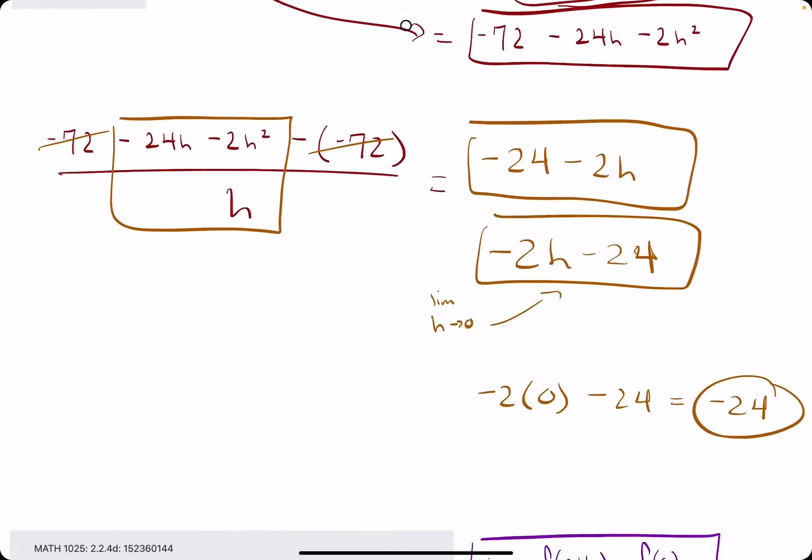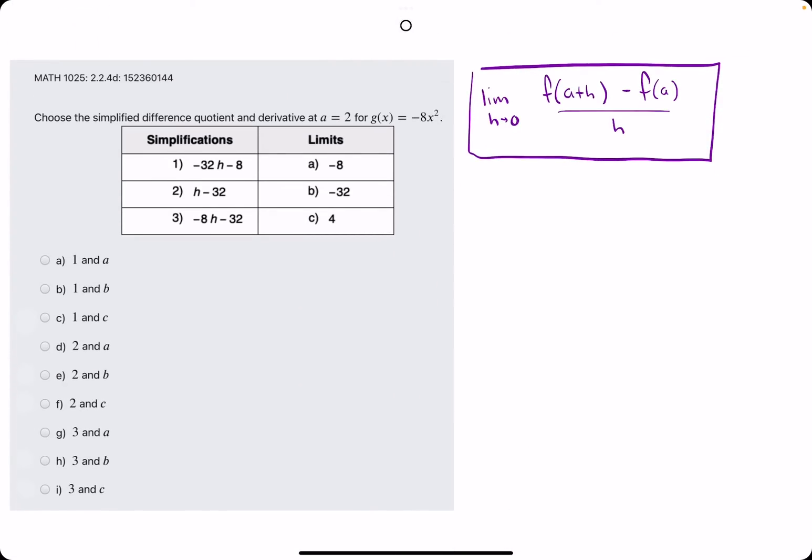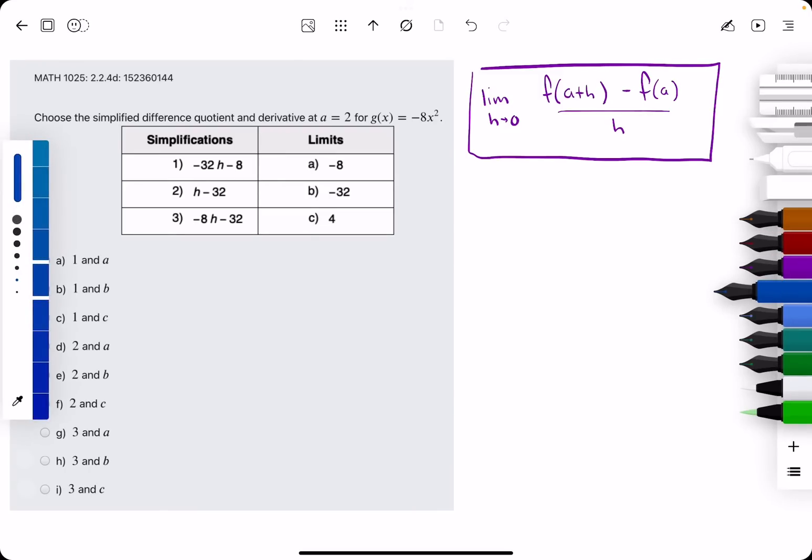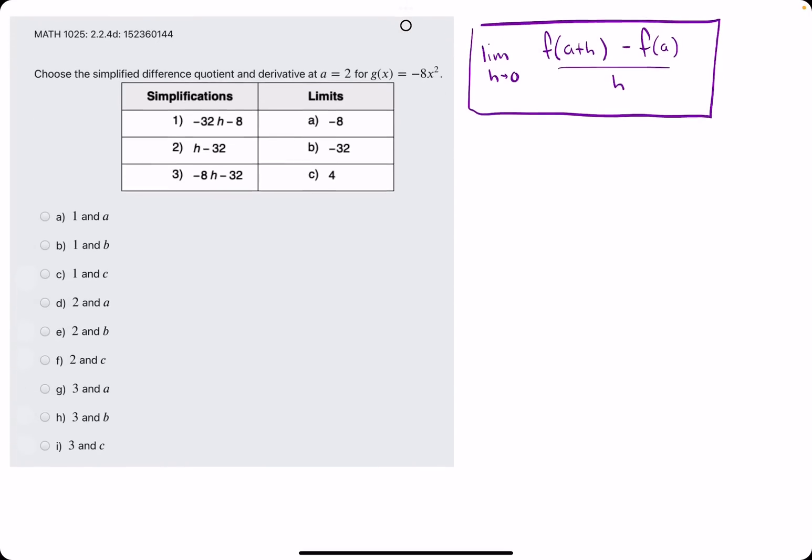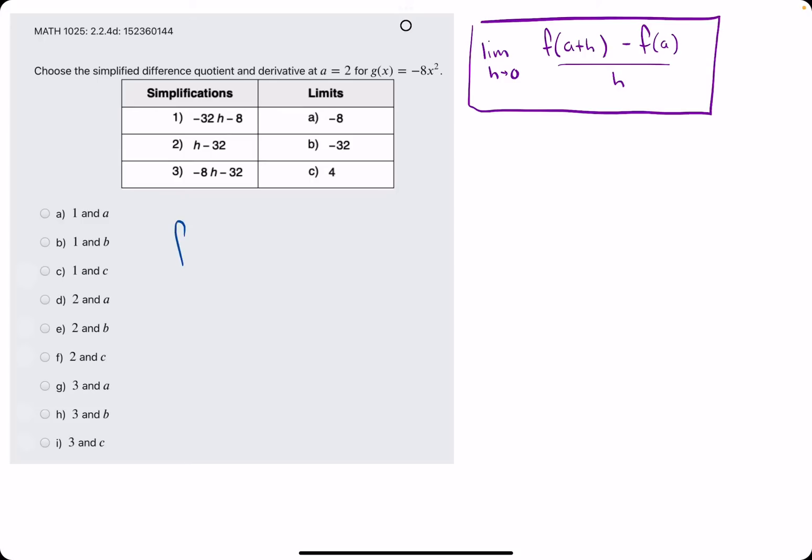I'll go ahead and work out one more example of this. So feel free to stick around if you'd just like to see one more worked out. So we're finding f of a, which is f of 2.